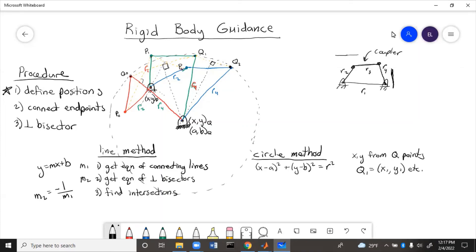So then you'll have three equations. So one equation per Q point or one equation per P point. And then there will be three unknowns, a, b, and r. So we solve that system of three equations.